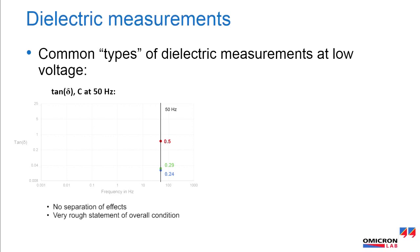And no separation between different effects like changes in the material due to aging, quality, or structure. As can be seen in the tangent delta at 50 hertz chart, the tangent delta value for the green and blue curve are nearly the same. It seems that the materials have the same structure and quality.